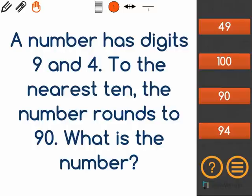Let's take a look at this rounding question. A number has the digits 9 and 4. To the nearest 10, the number rounds to 90. What is the number?